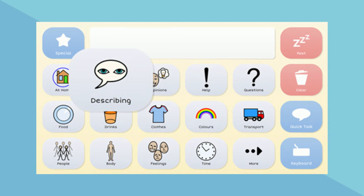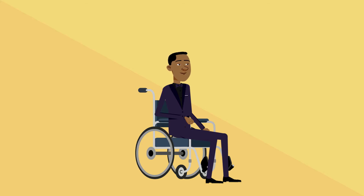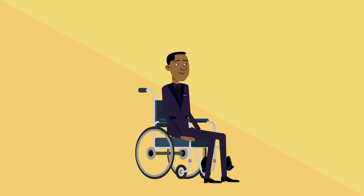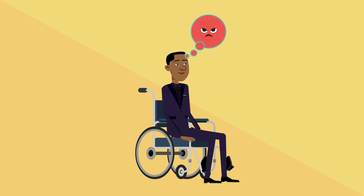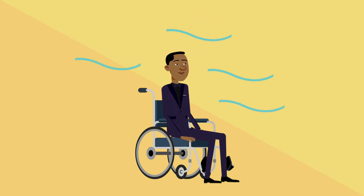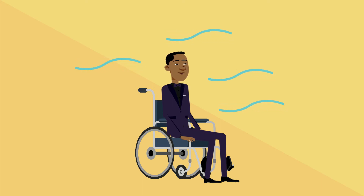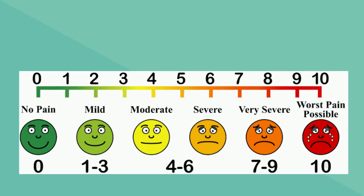For example, a headache could be described as throbbing or sharp. Anxiety could be described as an emotional feeling, negative thoughts, tight chest, or a shaky feeling. If you have pain, you might want to talk to your support person about a pain scale and decide on the level of your pain.